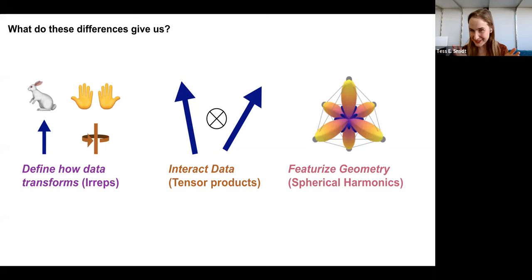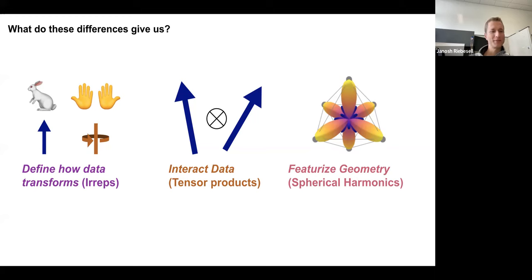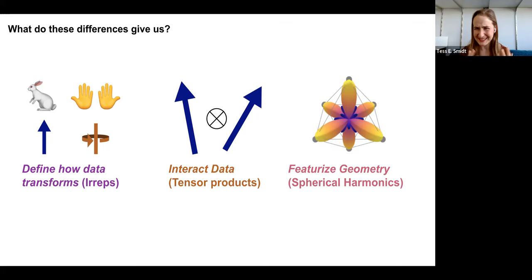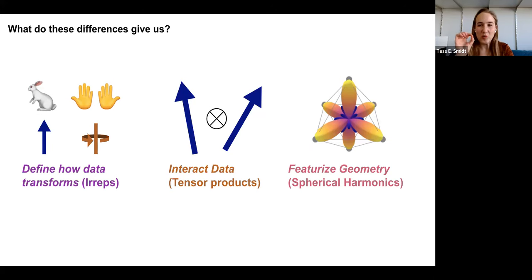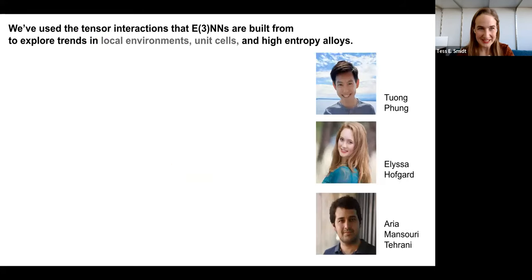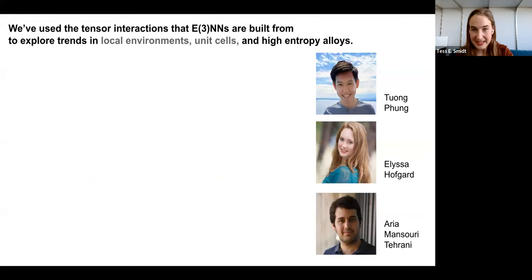Now for applications. If you use even just the base mathematical operations, you can do a lot of analysis comparing local environments, unit cells, and finding short and long range correlations in high entropy alloys. One thing we've been focusing on is the bispectrum. You take a local environment, compute a spherical harmonic projection X, take the triple tensor product of X with itself, and extract just the scalar information. This gives an invariant descriptor that is smooth under distortion, displays lots of zeros indicating high symmetry, and is interpretable — you can trace a smooth path from an octahedron to a trigonal prism.